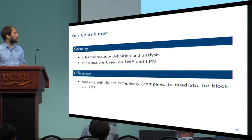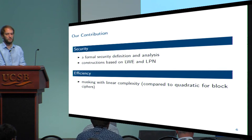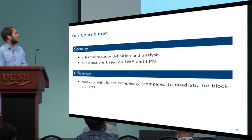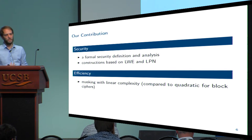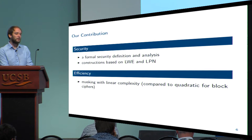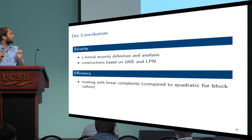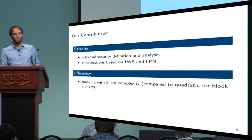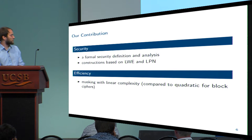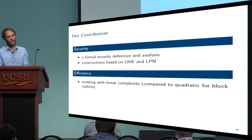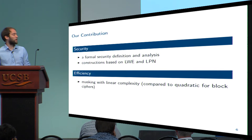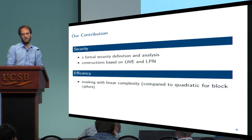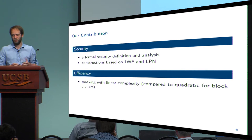We have a certain leakage model in which you usually share the secret key, corresponding to a countermeasure called masking. You can determine the hardness for an adversary to attack such a scheme by the amount of shares. The complexity in our solution grows linearly in the amount of shares, while for block ciphers, for example, this grows quadratically — and masking is a very practical approach used in practice.